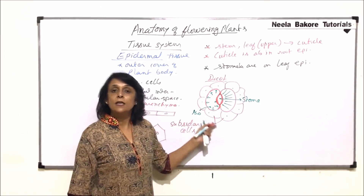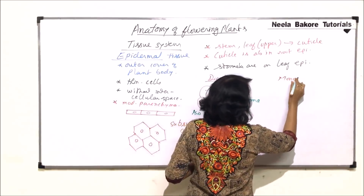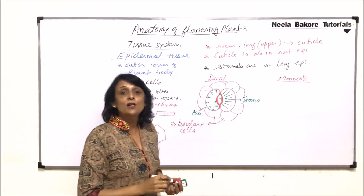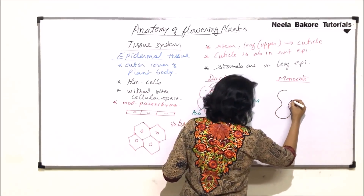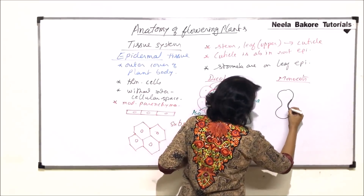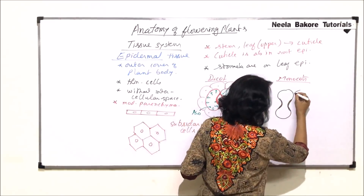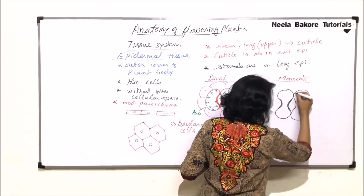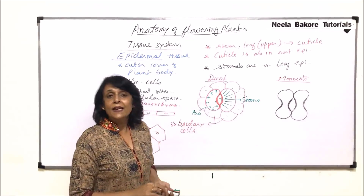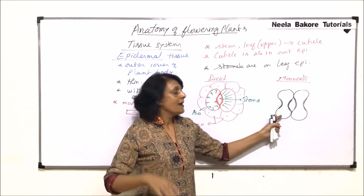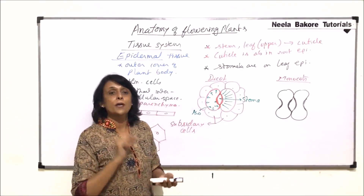In monocot plants, the shape of the guard cell is different — the guard cells are dumbbell-shaped instead of kidney-shaped. The membrane or wall in the curved region is thicker compared to the rest of the membrane. When water enters, the area with thin wall stretches more and the area with thick wall stretches less, and this is one reason for the opening of the stoma.